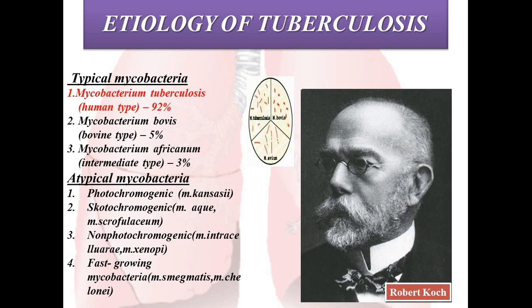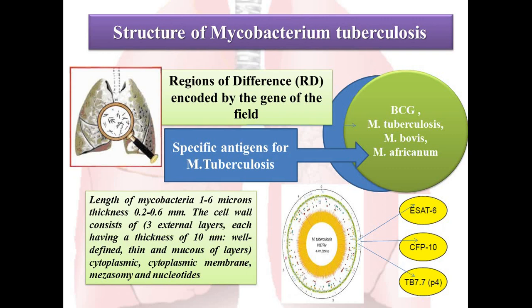There are also atypical mycobacteria which cause mycobacteriosis. The French scientist Runyon divided these atypical mycobacteria into four groups: photochromogens, which grow in the light; scotochromogens, which are pigmented in the dark; non-photochromogens; and fast-growing mycobacteria.